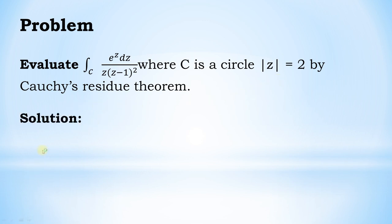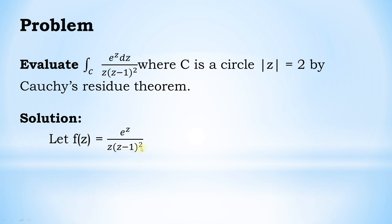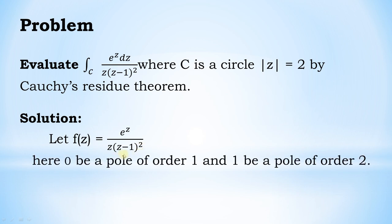The solution: first write the value of f of z. Here f(z) = e^z divided by z(z−1)². Here z = 0 is a pole of order 1 and z = 1 is a pole of order 2, because at these two points the given function is not analytic, therefore these are the poles.